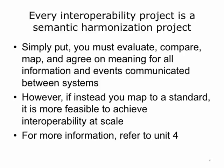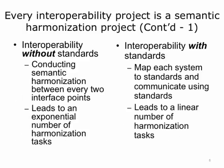Every interoperability project is a semantic harmonization project. Simply put, you must evaluate, compare, map, and agree on meaning for all information and events communicated between systems. However, if instead you map to a standard, it is more feasible to achieve interoperability at scale. Interoperability without standards means you have to conduct semantic harmonization between every two interface points, leading to an exponential number of harmonization tasks. But with standards, you map each system to standards, leading to a linear number of harmonization tasks that only grows linearly at scale.